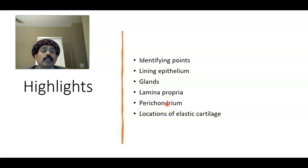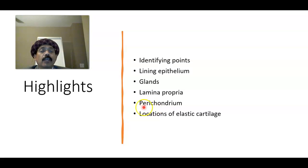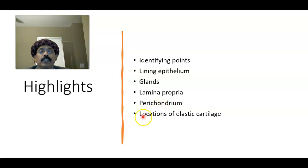The perichondrium has two layers: one is the fibrous layer containing fibroblasts, and the other is the cellular layer containing the chondrocytes. The perichondrium covers the cartilage on both surfaces.